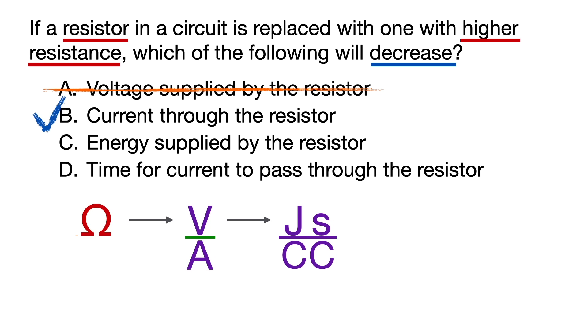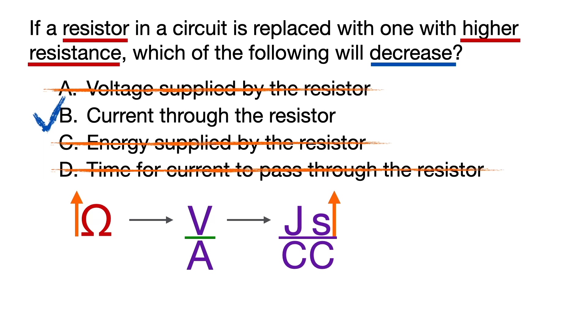So now, as resistance increases, energy also increases because ohms and joules are directly related, which eliminates answer choice C. Likewise, as resistance increases, time increases because ohms and seconds are also directly related, which eliminates answer choice D and confirms that answer choice B is the correct answer.